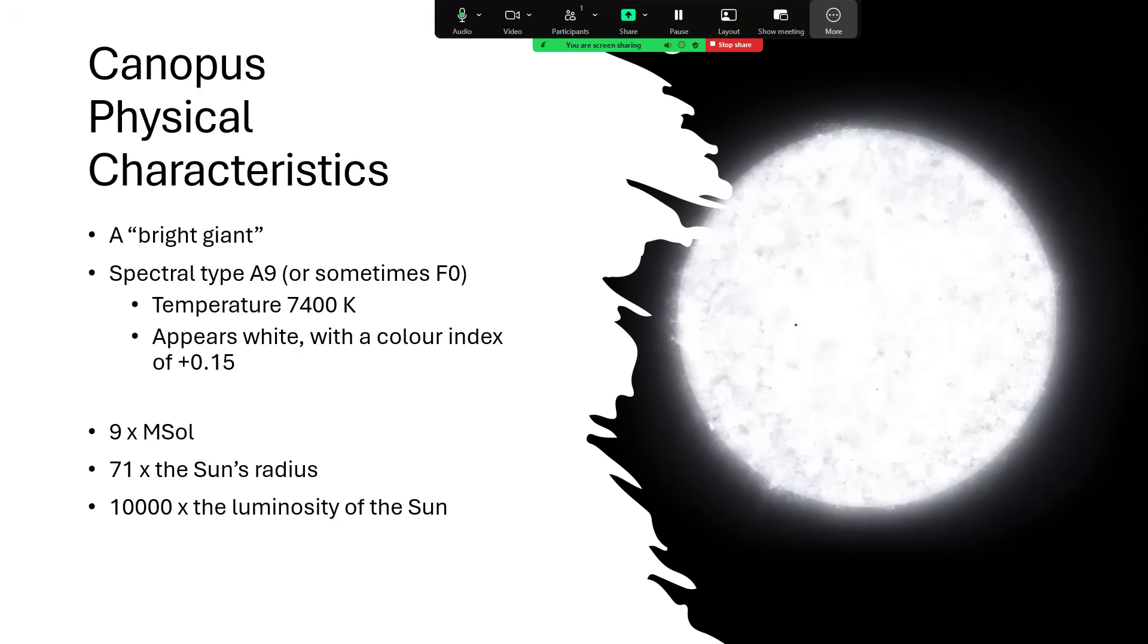They estimated the temperature of just under 7,000, but now the modern figure is 7,400. And this makes it appear white with a color index very close to zero at plus 0.15.